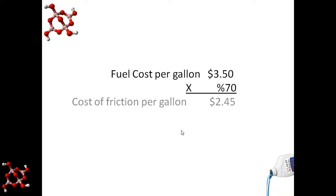If we lose approximately 70% to friction for each gallon of fuel consumed, at a fuel cost of $3.50 per gallon, our cost of friction per gallon is $2.45. That's significant.